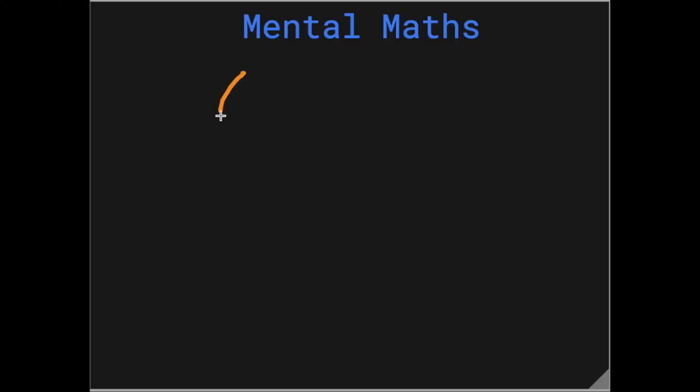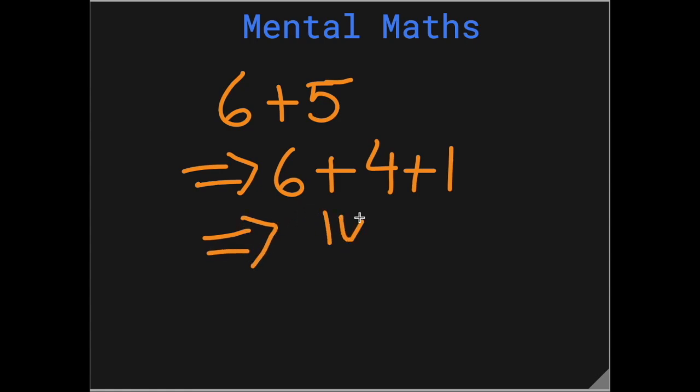Let's do another question. 6 plus 5. So what can we borrow from 5 to make 6 into a 10? So 5 can be split into 4 plus 1. And 4 and 6 make 10. So the question will become 10 plus 1, which is equal to 11. Isn't this an easier way of doing this addition?